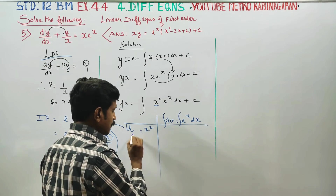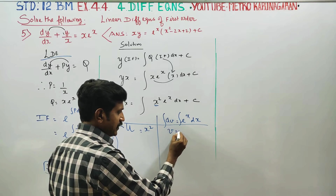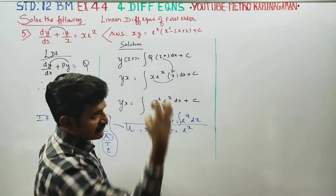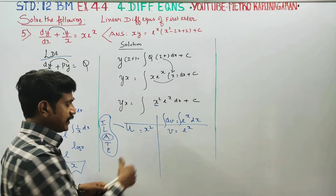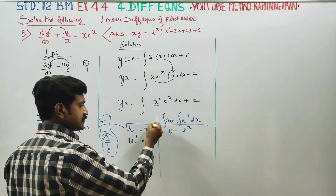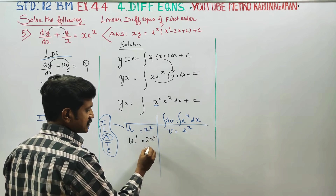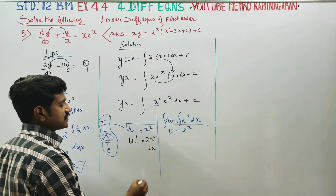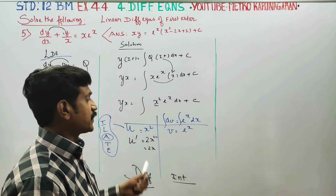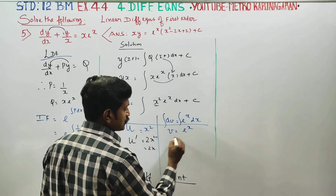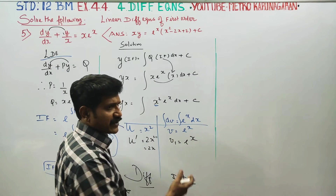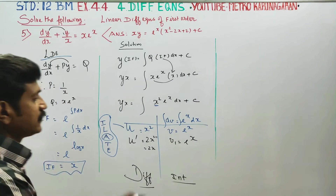Applying UDV: u equals x squared, v equals e power x. Differentiating u: u dash equals 2x, and v1 equals e power x. Then u double dash equals 2, and v2 equals e power x.